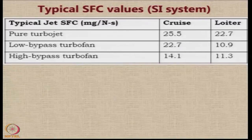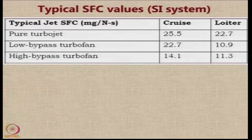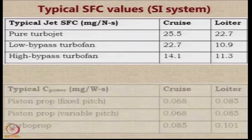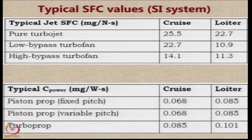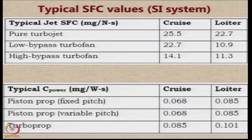Rather than saying 0.000255 or some such very small number, when you work in milligrams per Newton second you get numbers like 25, 30, 14, 15, which are easy to talk about. So if you do not have any idea about what values you will be getting, you can assume these values — they are realistic numbers. For piston prop or turboprop aircraft, the typical values of SFC based on power, called power SFC, in milligrams per watt second, tend to be as listed here.